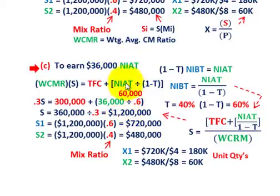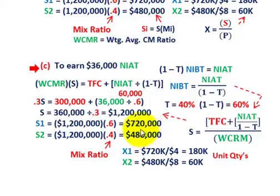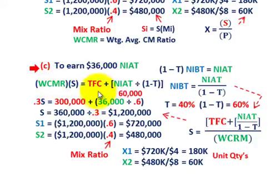That concludes our example where we looked at break-even in terms of dollars, then what we had to earn for net income before taxes and net income after taxes, again in terms of dollars. Once we determined the dollar amounts, we divided by the unit price for each product to get the quantity to sell. The key was determining the weighted average contribution margin ratio based on dollars — it's a ratio but based on dollar amounts. That ends our discussion on solving for multiple products in terms of dollar amounts.